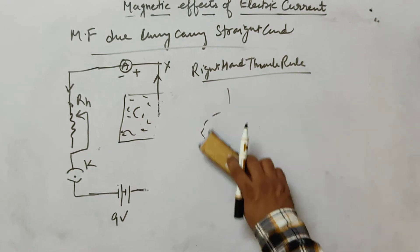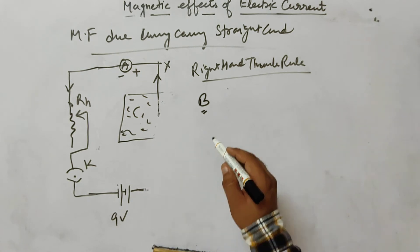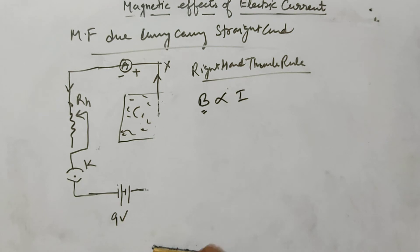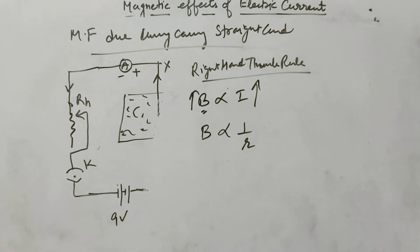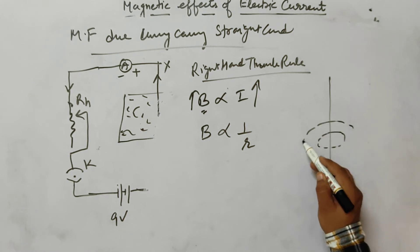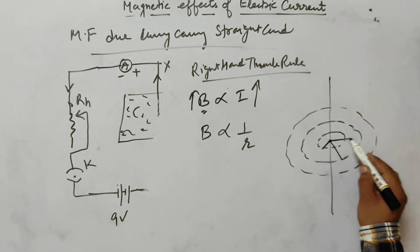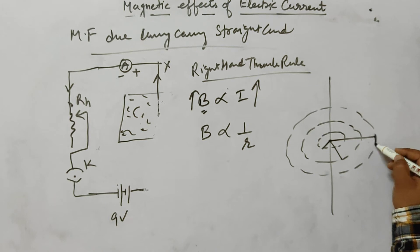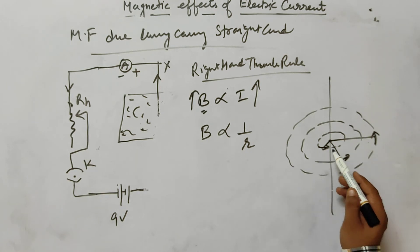The magnetic field B has two main factors. The first factor is current — it is directly proportional, meaning if you increase the current in the conductor, the magnetic field also increases. The second factor is distance — it is inversely proportional. The distance is measured from the center of the conductor outward.